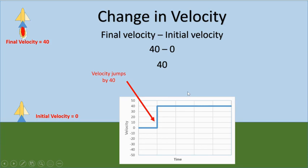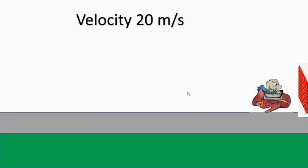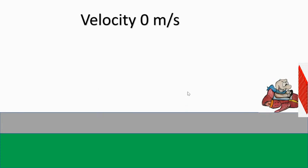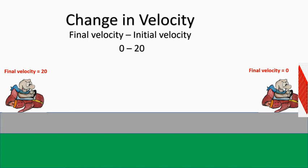Second example — let's look at something slowing down. Here's a character driving his car at 20 meters per second, and it crashes into a brick wall, so afterward he has a velocity of zero. What was his change in velocity? It's final velocity minus initial velocity. His initial was 20 and his final velocity was zero, so: zero minus 20, which means his change in velocity was negative 20.